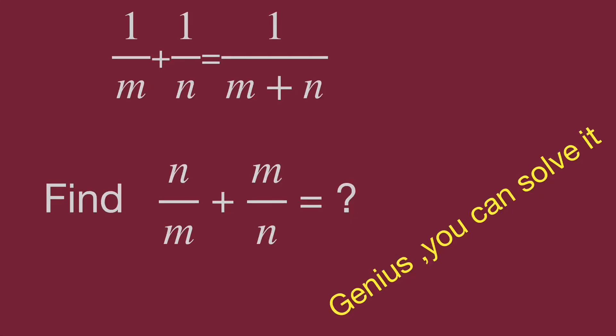Hello, the question for Math Olympiad practice from China Junior High School. We have 1 over m plus 1 over n equal to 1 over m plus n. Then find the value n over m plus m over n. Can you find out?